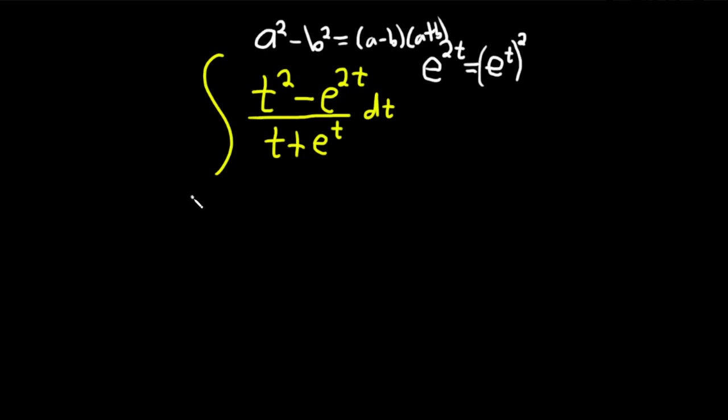So let's go ahead and write it that way first. So this will be t squared minus e to the t and this piece here is squared. And that's over t plus e to the t. Then we have our dt.